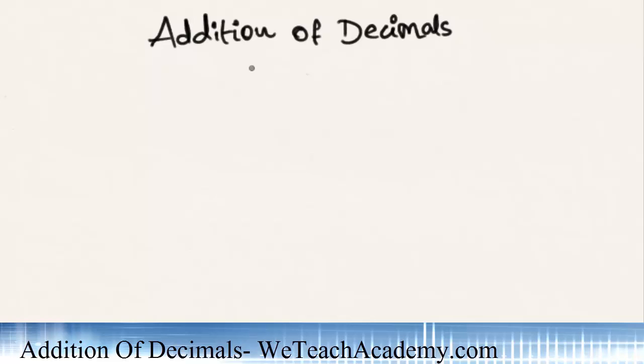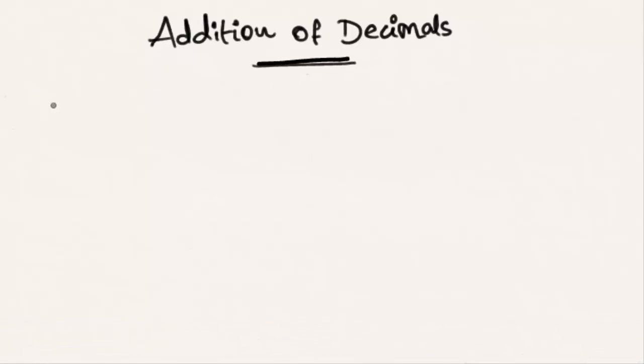Hey guys, welcome to WeTeachAcademy.com. In this presentation we're going to discuss addition of decimals. Let me explain with an example. Let's add 1.26 plus 3.75. Now let us line up these decimal numbers first.